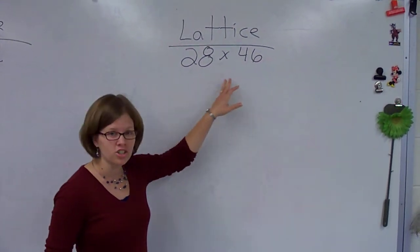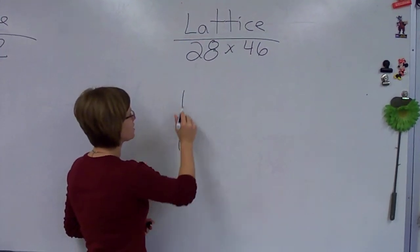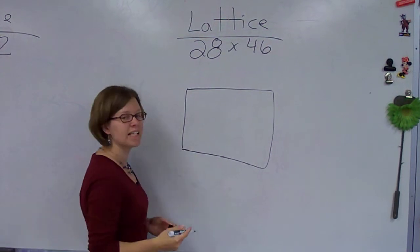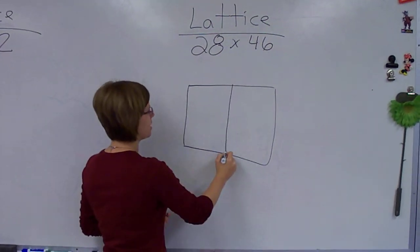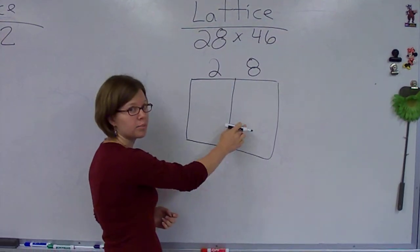So we're going to do a two-digit by two-digit here, 28 times 46. And what you do is you're going to draw a box. Okay, and I need it to have two columns because I'm going to write my number 28 here. It has two digits in it, so I need one column per digit.